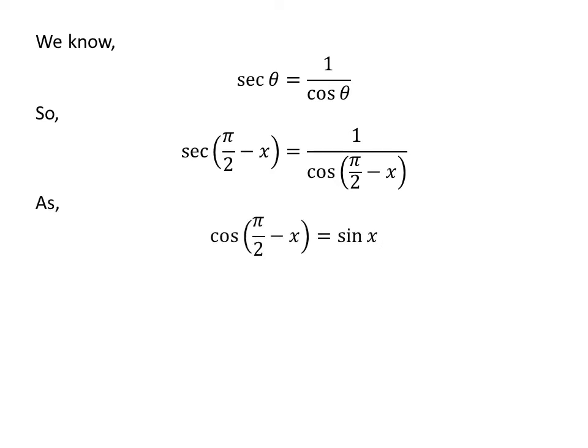We also know the trigonometry identity cosine of half of pi minus x is equal to sine of x. The proof of this trigonometry identity has been explained in the video appearing in the upper right corner. The link of the video has also been mentioned in the description section.